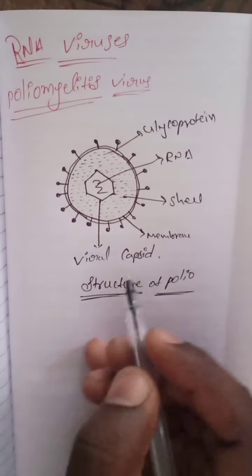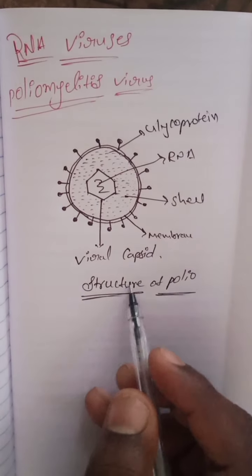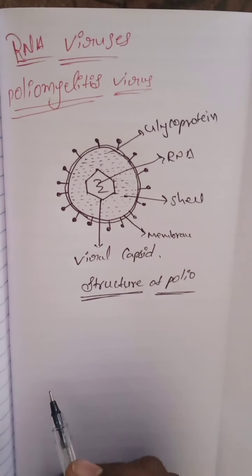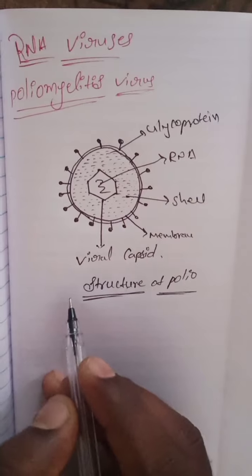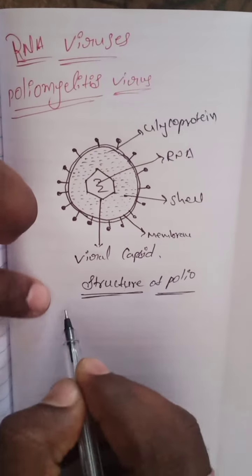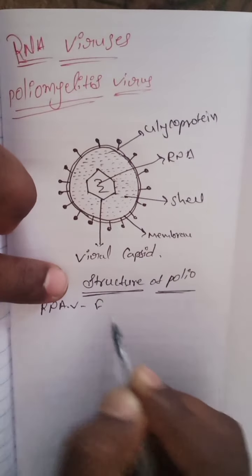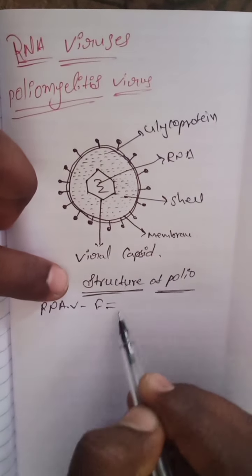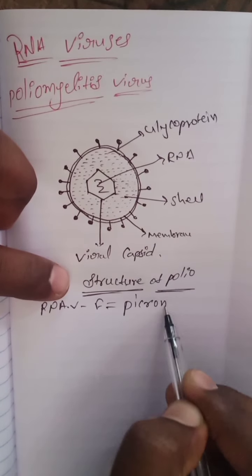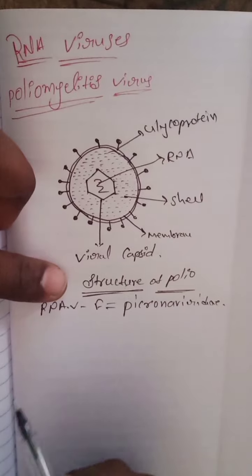This is the structure of the polio virus. It is an RNA virus belonging to the family Picornaviridae.